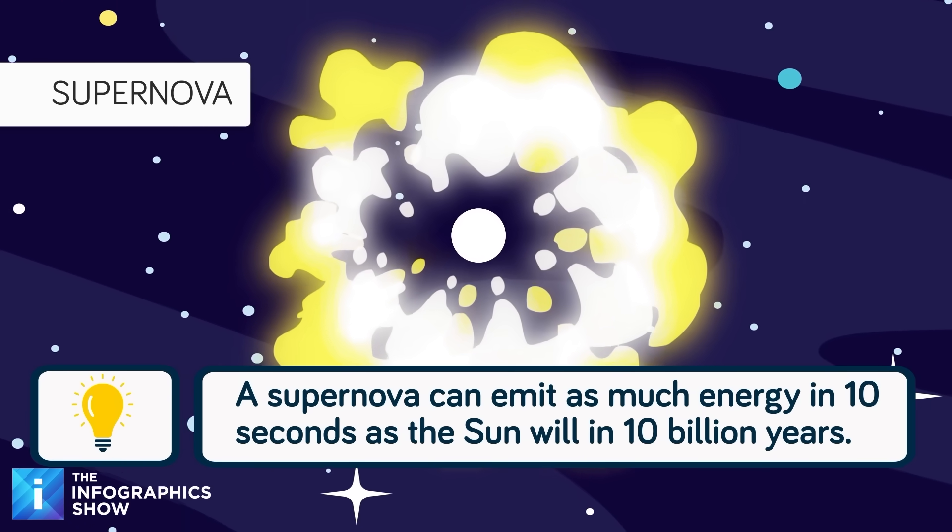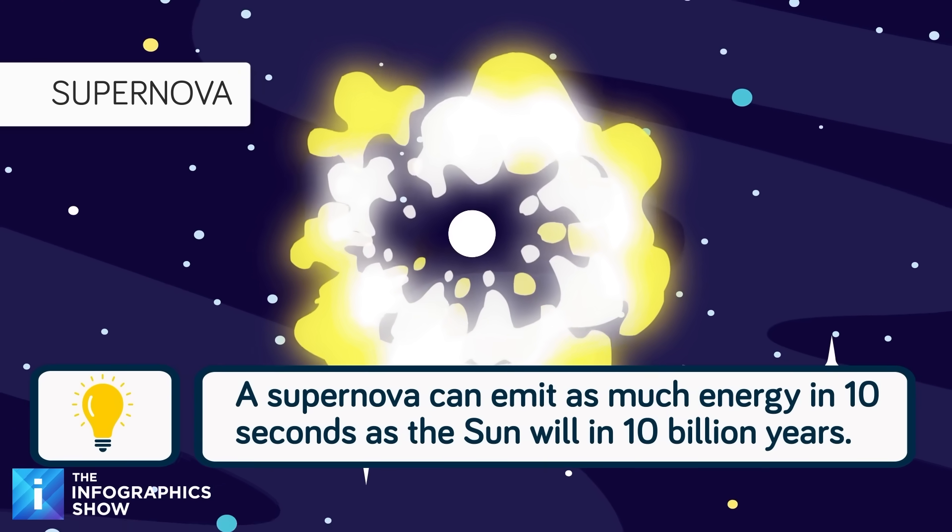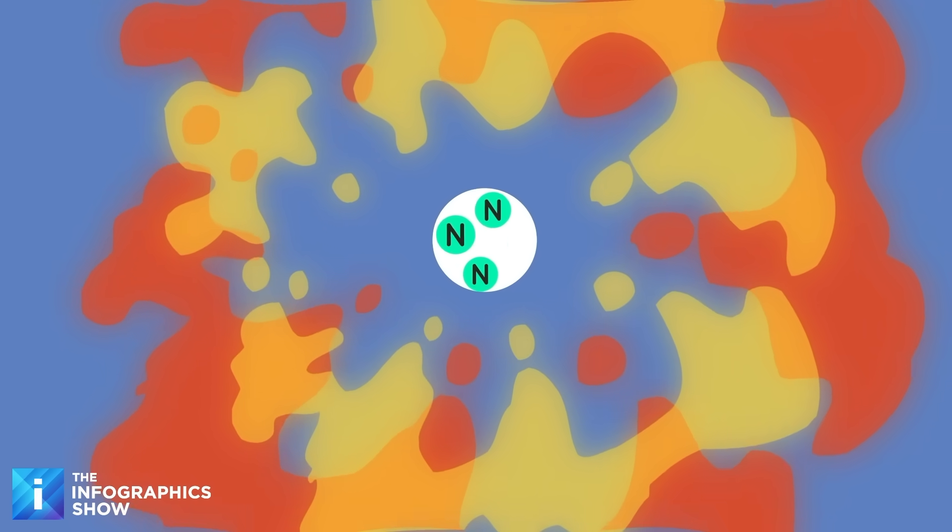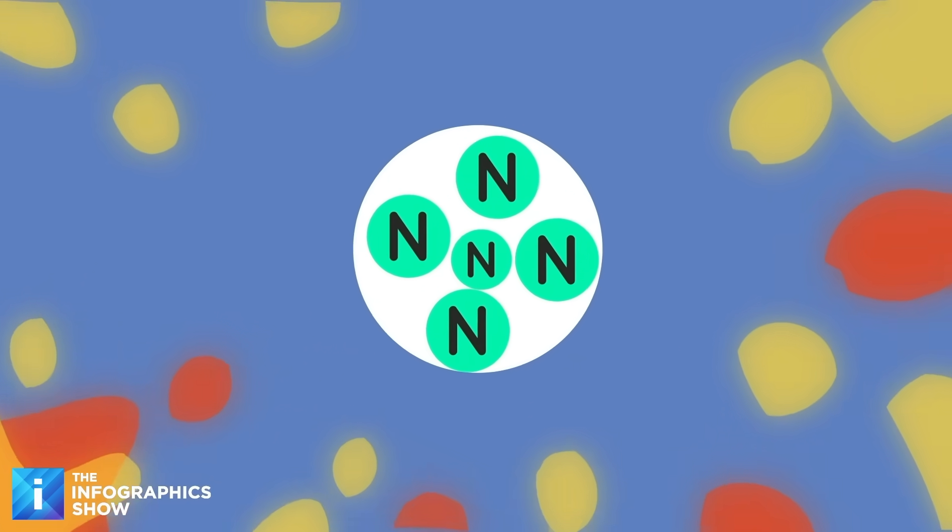The core collapses in on itself, and the outer parts are ejected violently into space. What's left in that core is incredibly dense. That core is made almost entirely of neutrons, hence it's called a neutron star.